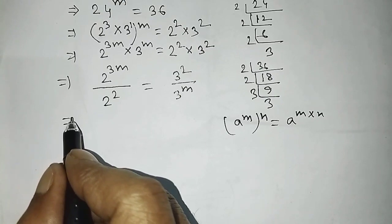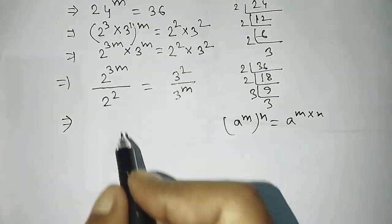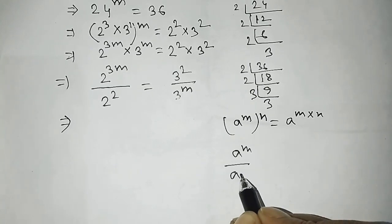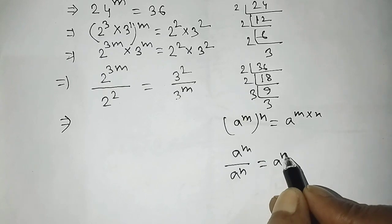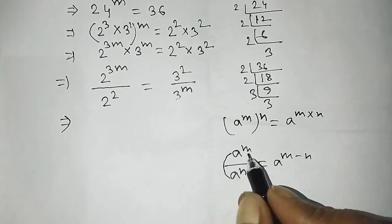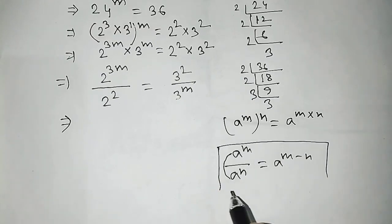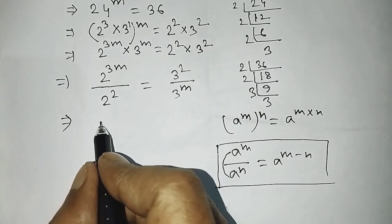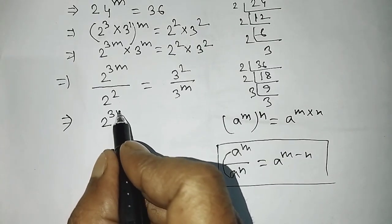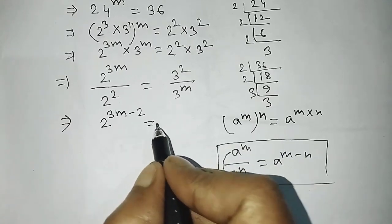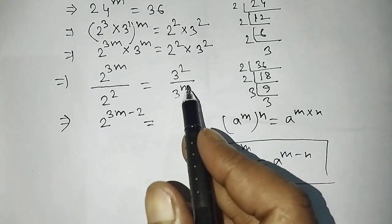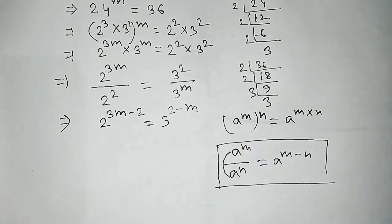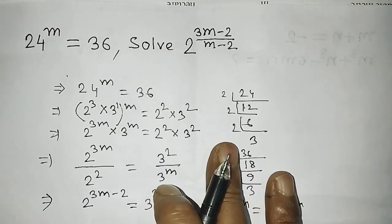Now in the power there is a division form. Apply the formula: a to the power m divided by a to the power n equals a to the power m minus n. When the base is the same, the powers subtract. Applying this formula gives: 2 to the power 3m minus 2 is equal to 3 to the power 2 minus m.